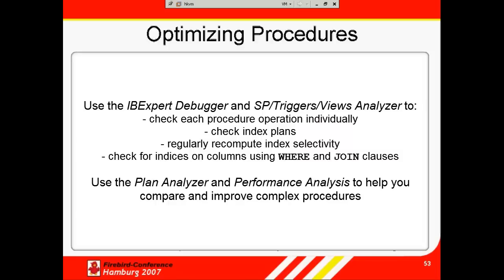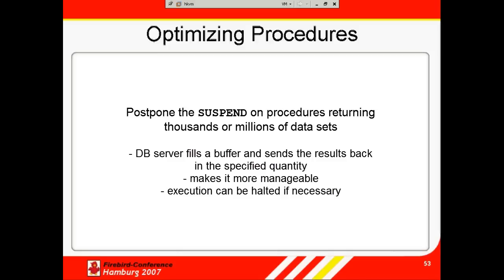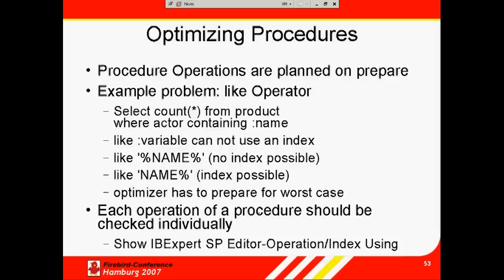Check each procedure operation individually and remove bottlenecks. Use the debugger and the SP triggers views analyzer. Check the index plans, not forgetting to recompute the selectivity of your indices regularly. Check for indices on columns used in WHERE and JOIN clauses. Use the plan analyzer and performance analysis to help you compare and improve your more complex procedures. Another consideration with extremely complex procedures is to postpone the suspend. If you have a suspend on every data row on a report returning thousands of rows of calculated results, it will slow your system. Put your suspend every 100 or 1,000 rows. This way, the database server fills a buffer and sends the results back in the specified quantity, making it more manageable and you can stop it at any time. Careful definition of your procedure can bring huge performance advantages.